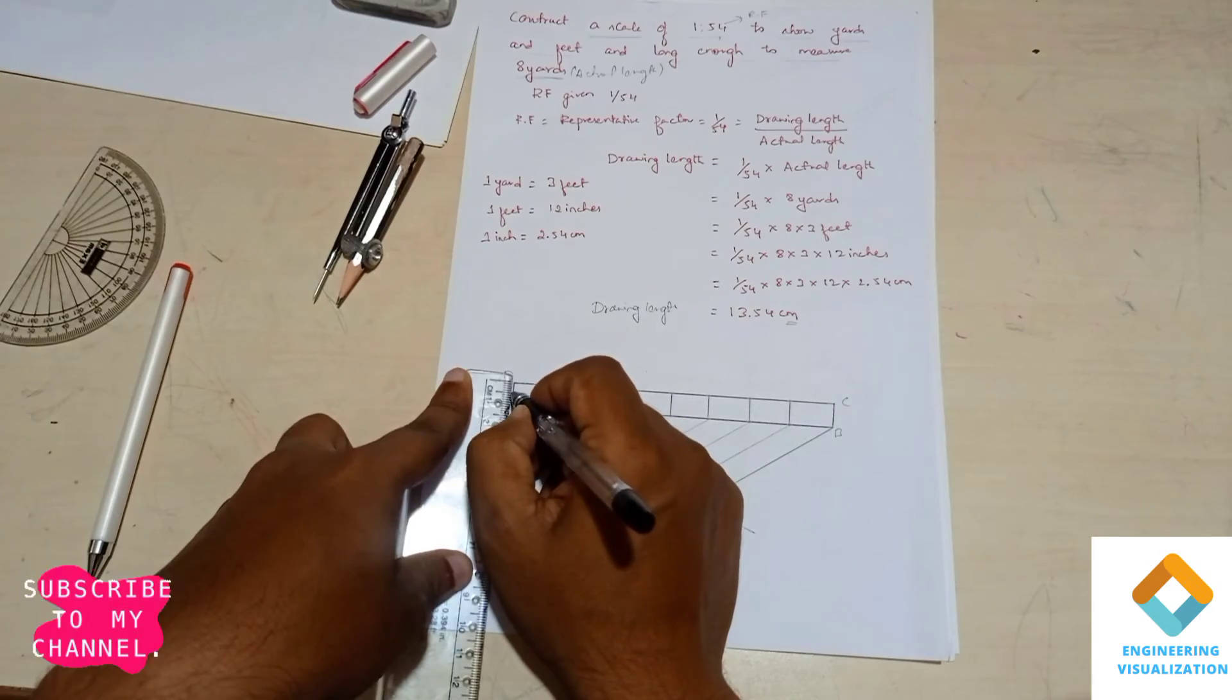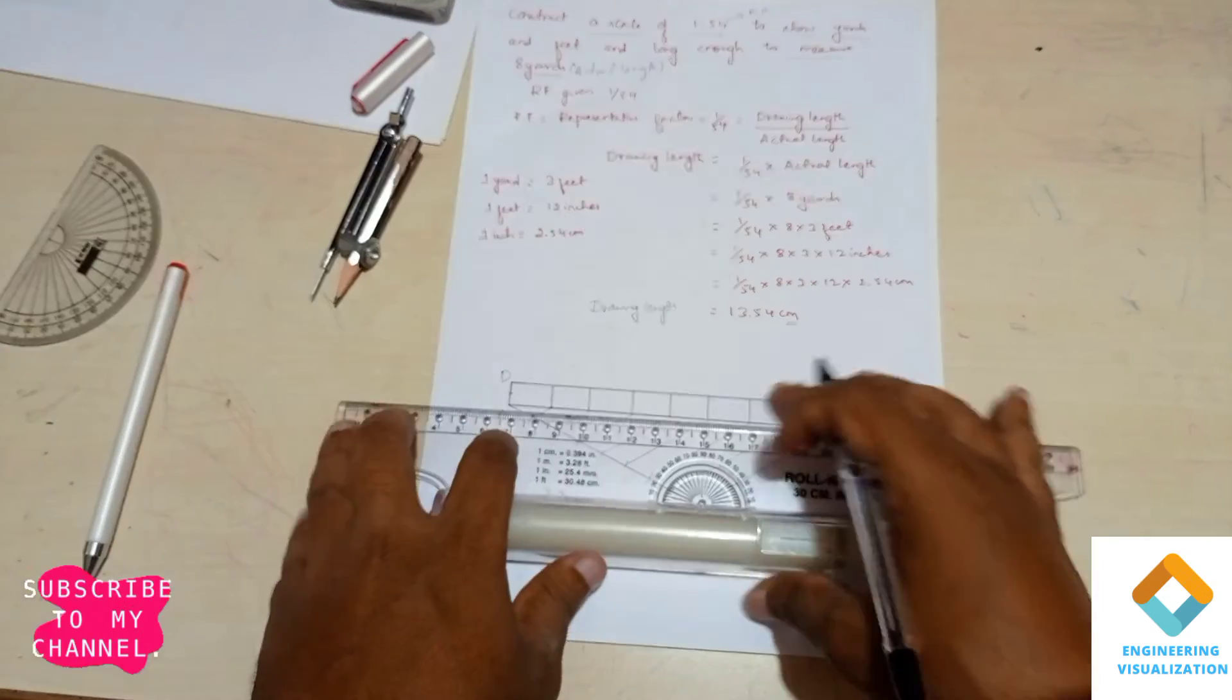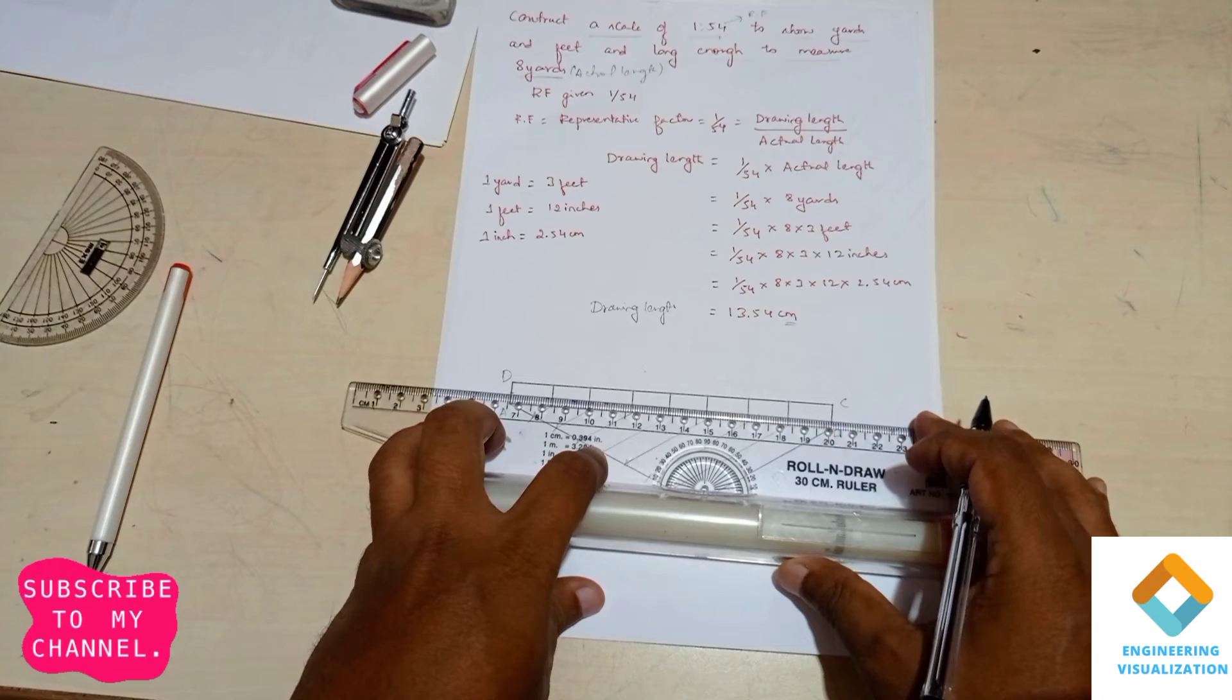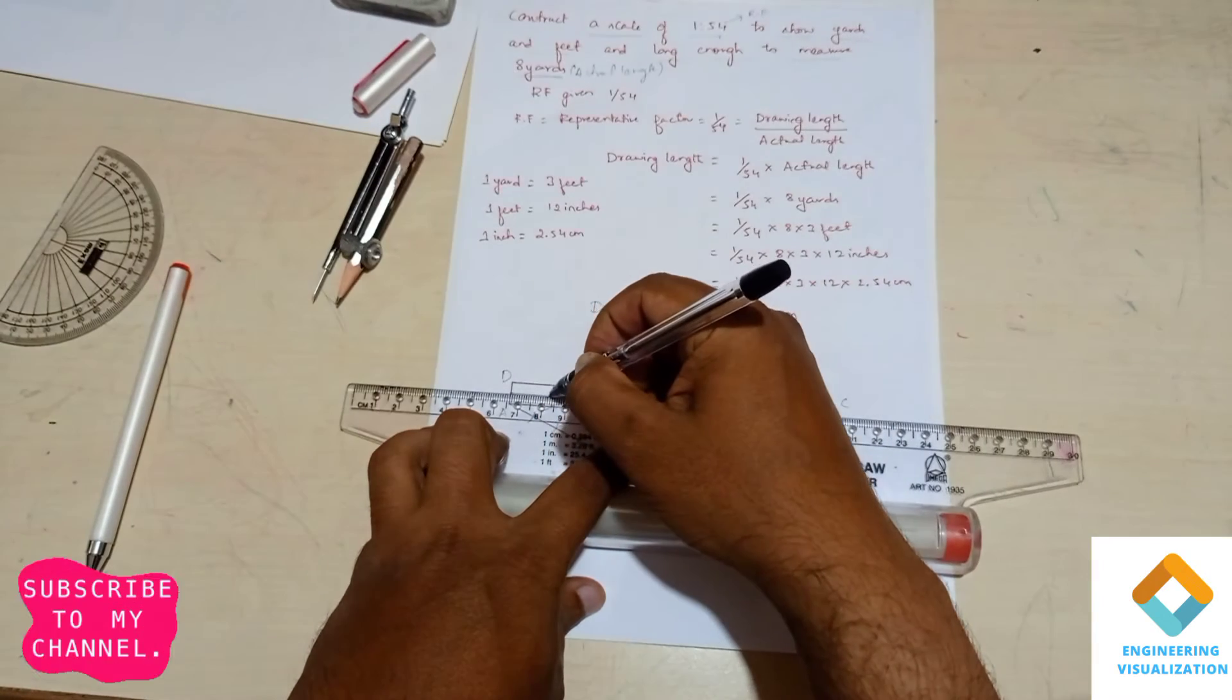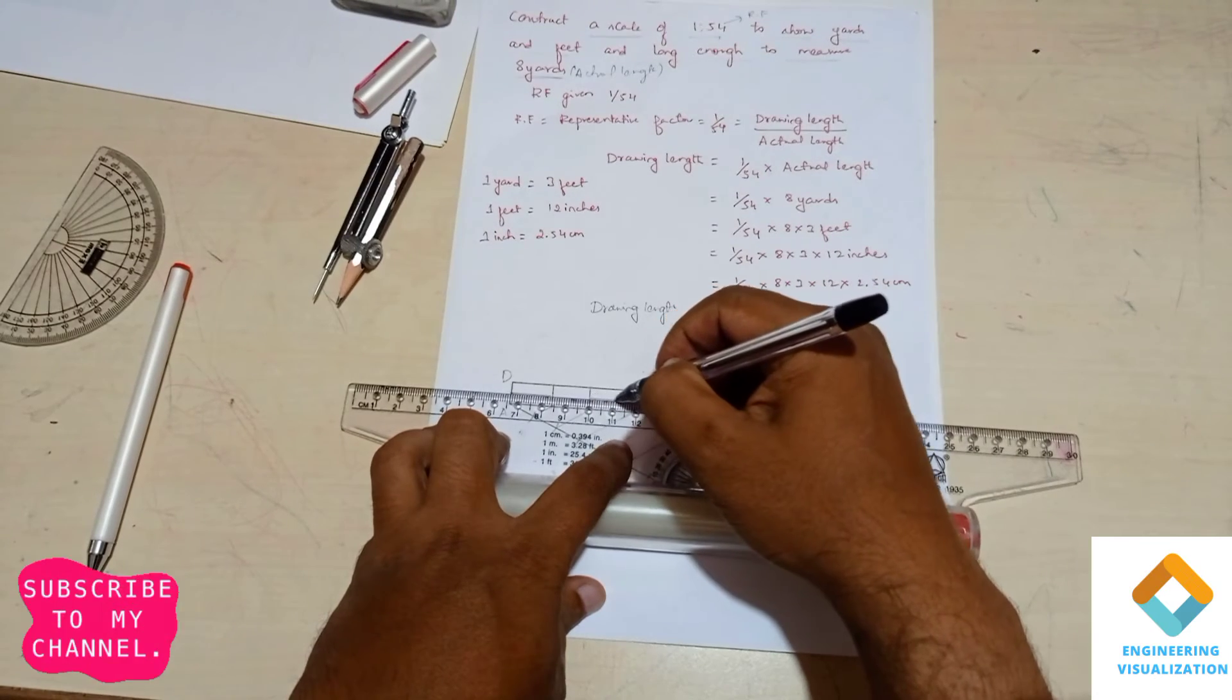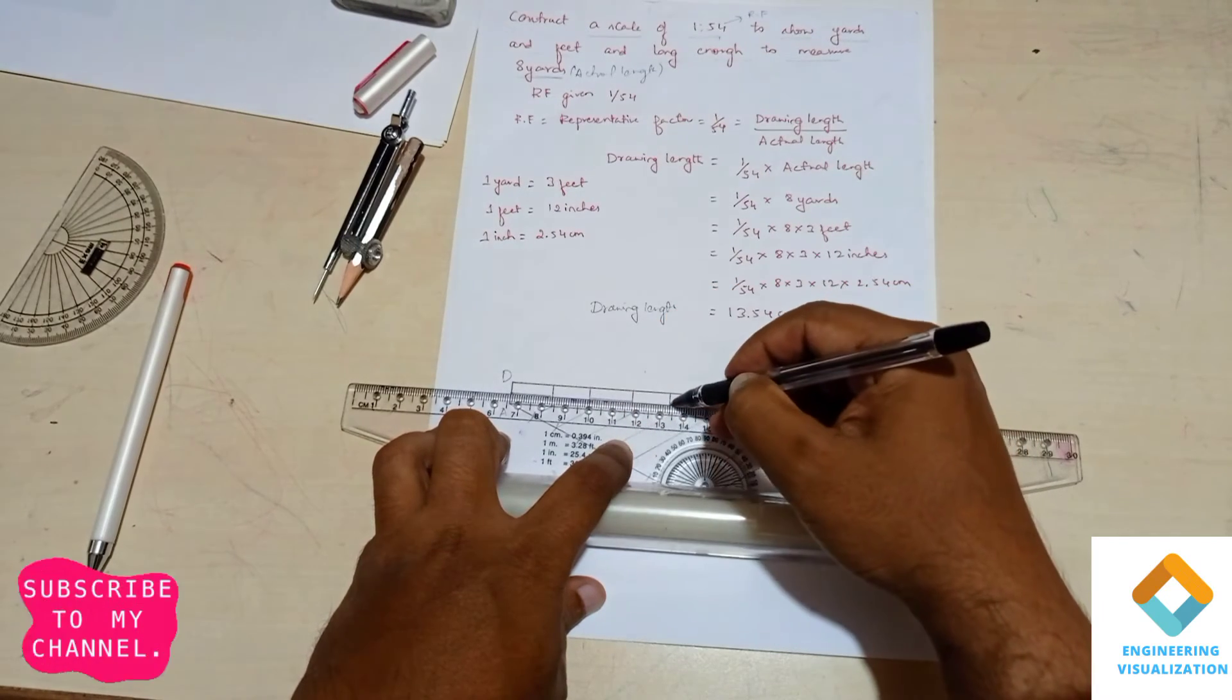Exactly at the midpoint I'm marking a point, exactly at 0.5 centimeter, and then drawing a horizontal line alternatively for these boxes. Leave one box and then mark it.